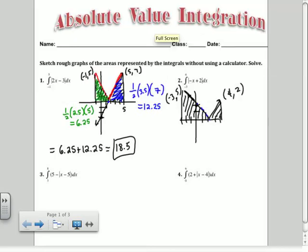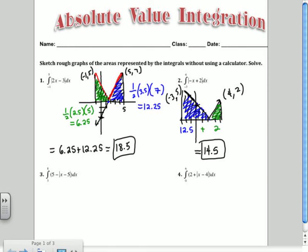Okay, so you should get the area of these two triangles here. Your two points that are important are 4, 2 and negative 3, 5. Did you guys get those two points? So you're just plugging into the absolute value and finding the y value. Alright, so I have two triangles. What's the area of the triangle on the left? 12.5. What's the area of the triangle on the right? 2. So your total area is 14.5.